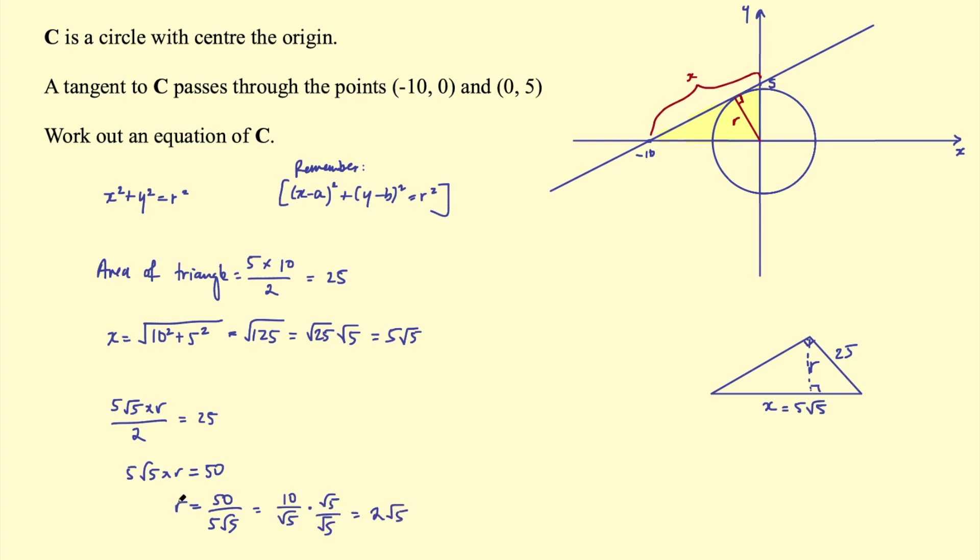So now I have the radius and I can finish off by writing the equation of C. So the equation of C will be x² + y² = r². So 2√5 squared is 4—√5 squared is just 5—so this would be 4 times 5, which is 20. And that is your final answer there.